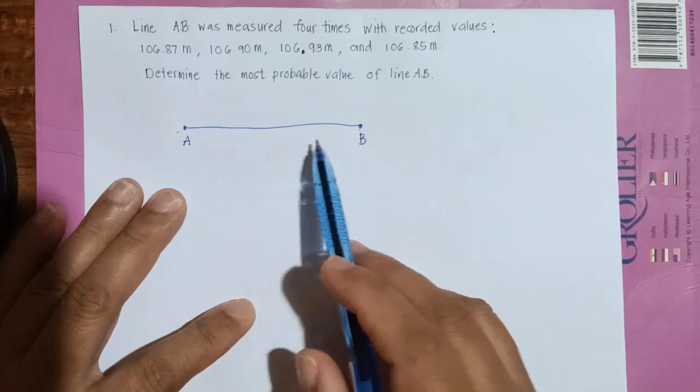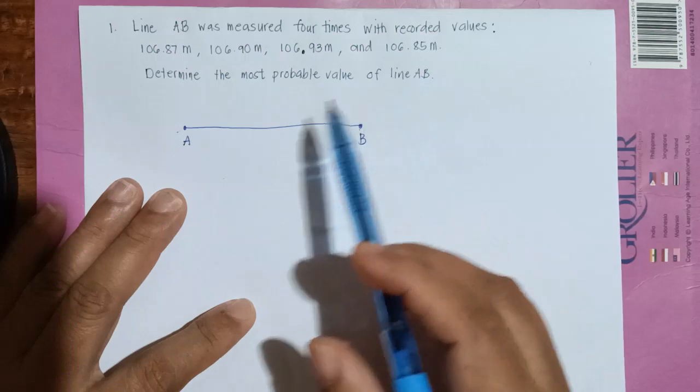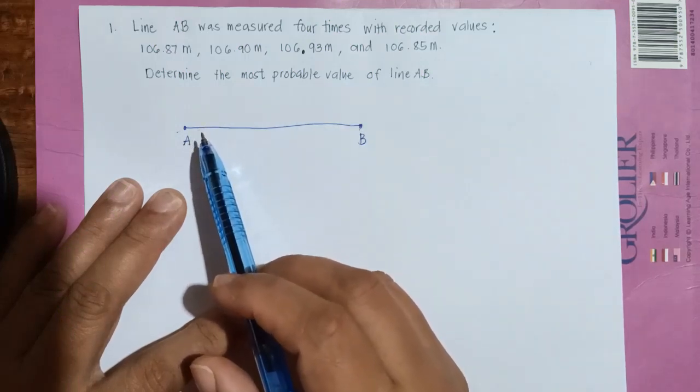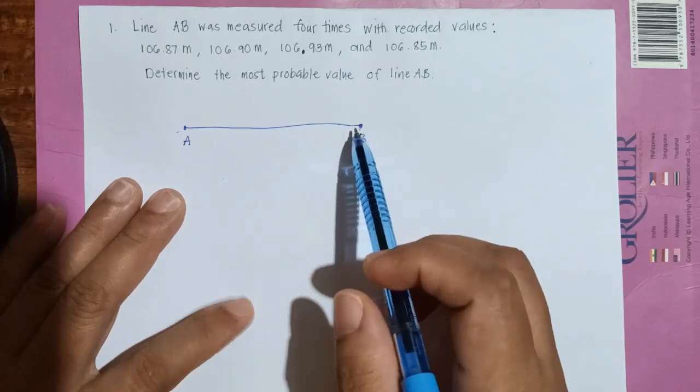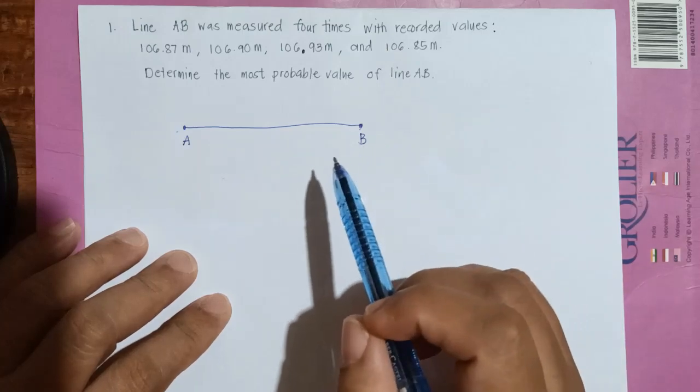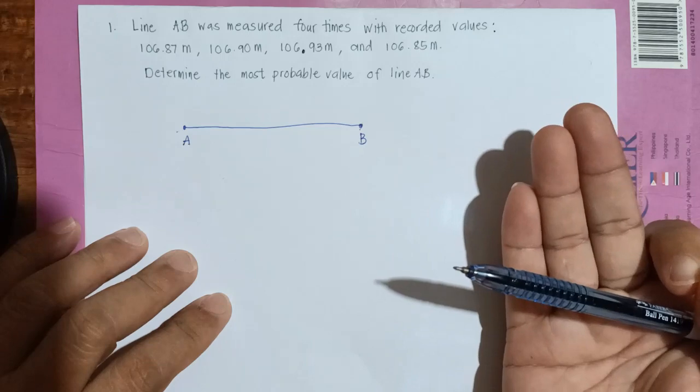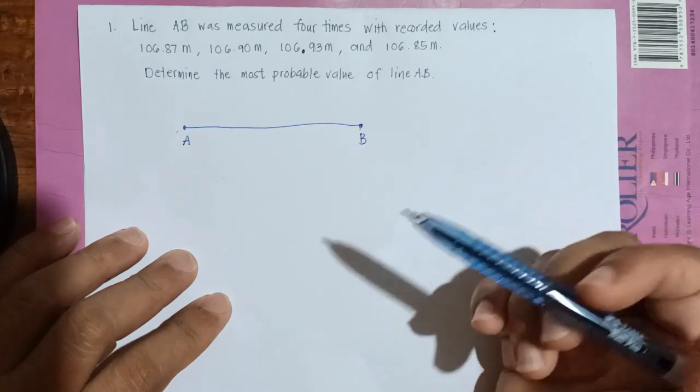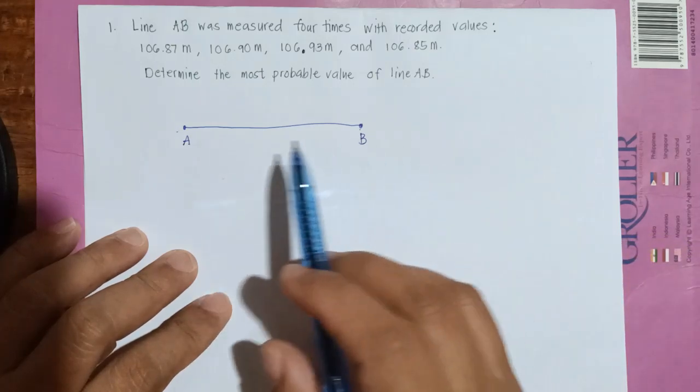And you are asked to solve what is the most probable value of this line. So among these four trials, among these four measurements, what is the value that is closest to the true value? If you recall our three types or three cases in solving the most probable value, we can say that this is under the repeated measurements.